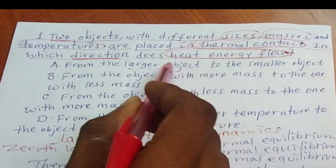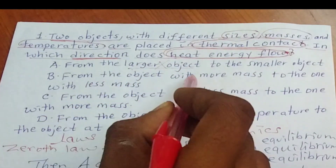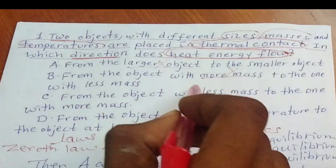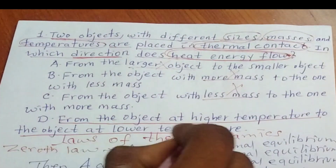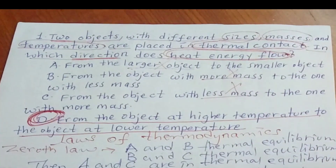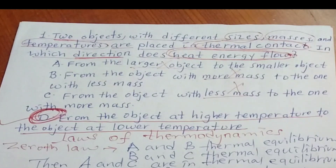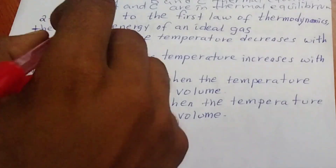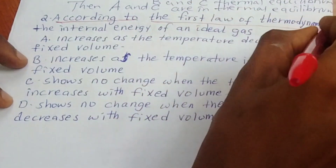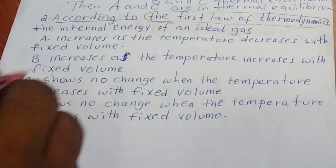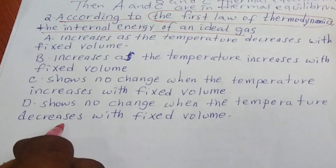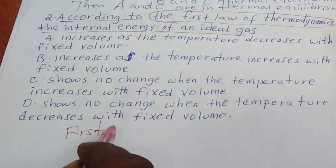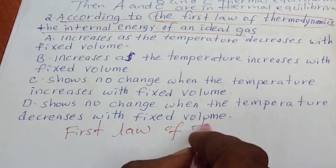So it is not from the larger object, not from the object with more mass, not from the object with less mass — it flows from the object at higher temperature to the object at lower temperature. According to the zeroth law of thermodynamics, temperature alone determines heat flow direction.